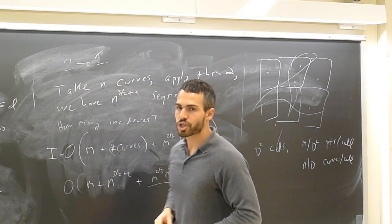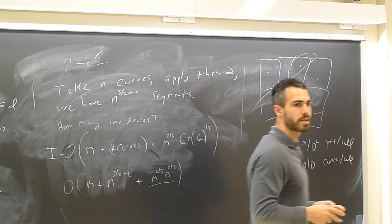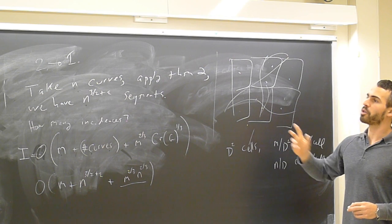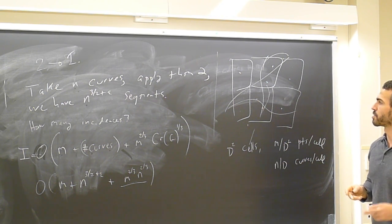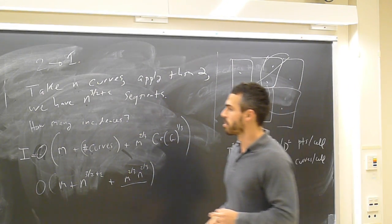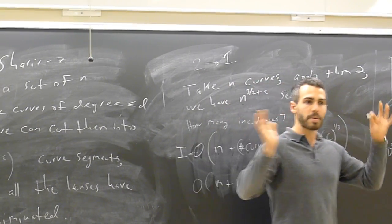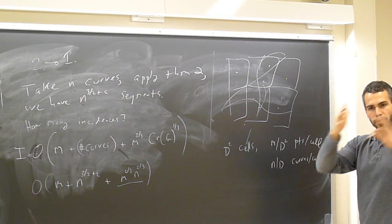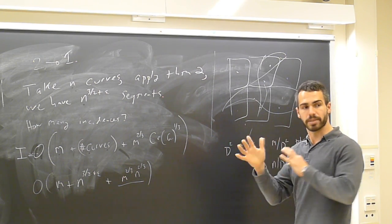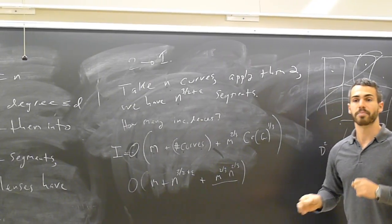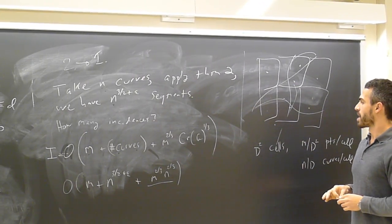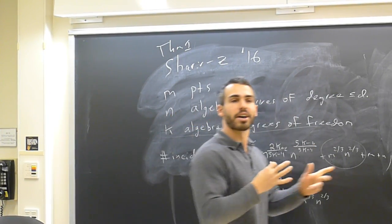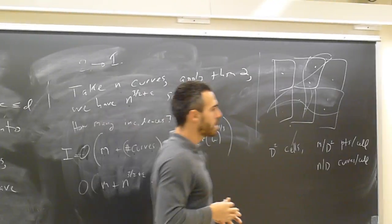In the dual parameter space, polynomial partitioning works well: each cell contains a fraction of the curve-points while the varieties (dual to original points) still cut across cells, so the ratio of curves to points decreases in each cell. Translated back, this means n is smaller relative to m inside each cell, which is exactly what makes the full argument work. The notion of 'algebraic degrees of freedom' is defined in such a way that this dual-space polynomial partitioning argument goes through.